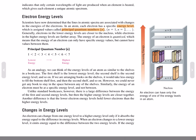As an analogy, we can think of the energy levels of an atom as similar to the shelves of a bookcase. The first shelf is the first energy level, the second is the second energy level, and so on. If we're arranging books on the shelves, it would take less energy to fill the bottom shelf first, and then the second shelf, and so on. However, we could never get any book to stay in the space between any of the shelves.